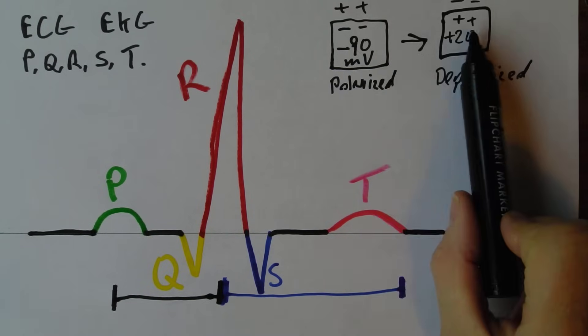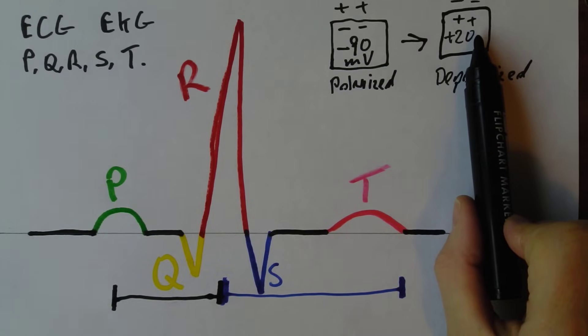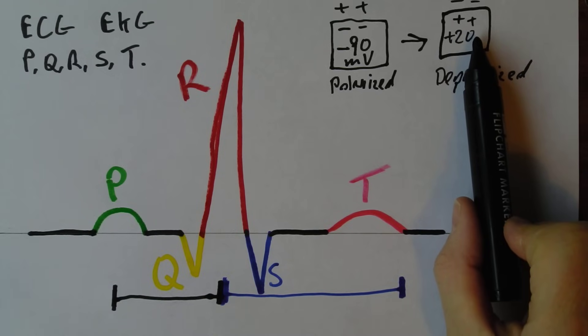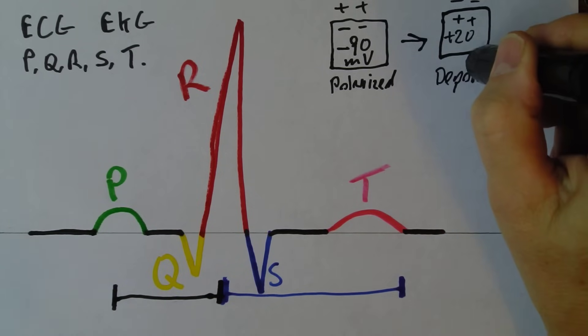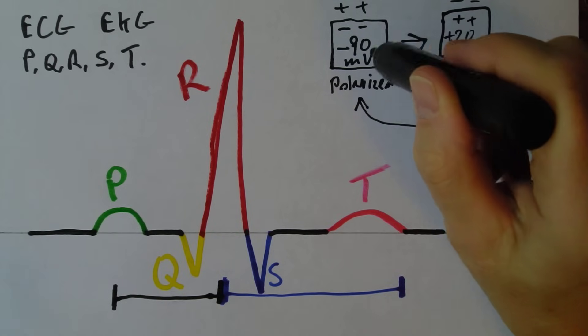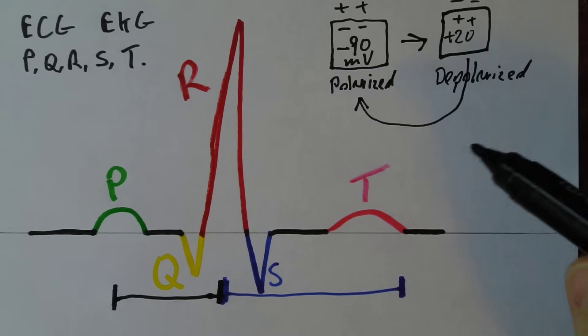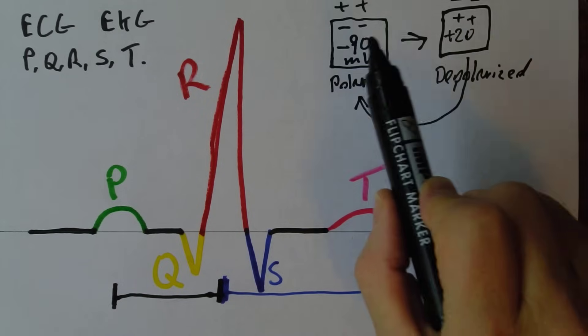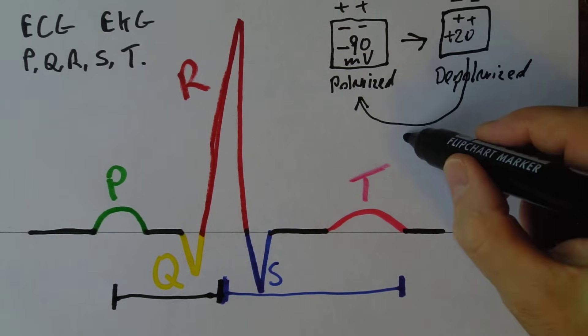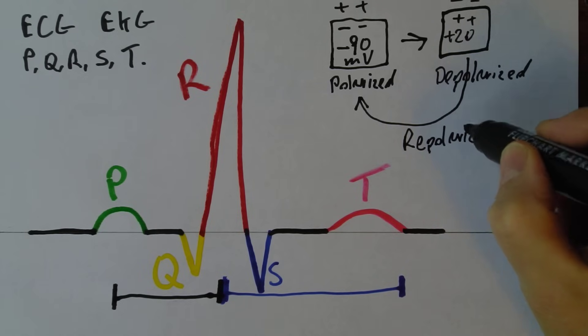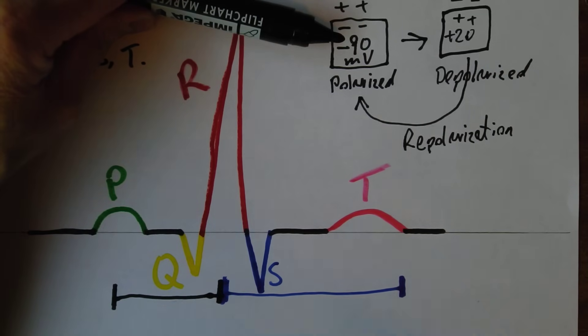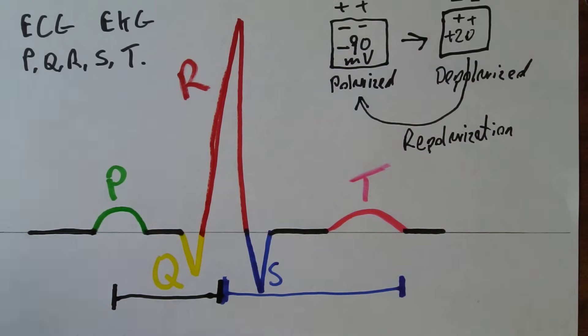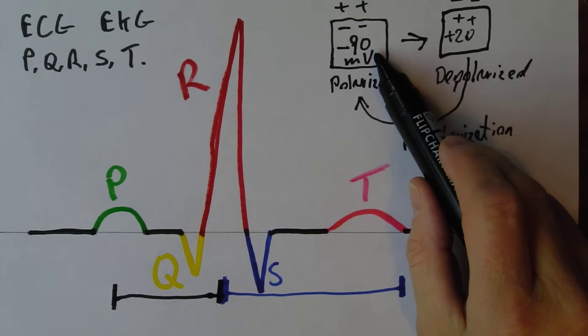But of course in order to contract the individual myocytes need to depolarize. But of course they can only depolarize when they're in a polarized state. This can't depolarize again because it's already depolarized. So if we want another muscle contraction we most certainly do, and another 0.8 of a second or so, this has to go back. The depolarized has to become polarized again. It has to change from being positive on the inside back to being negative on the inside. And that process is called repolarization. Because only when it repolarizes does it become polarized again. Because it can only initiate contraction when it changes from being polarized to being depolarized.